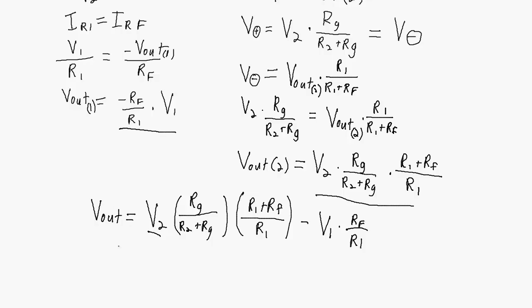In the special case where all resistors are equal to each other — R1 equals R2 equals RF equals Rg — then the first resistor expression becomes 1/2 times 2/1, which equals 1, and the second resistor expression also equals 1. So if all those resistors are equal to each other, the output voltage will simply be the difference between V2 and V1.